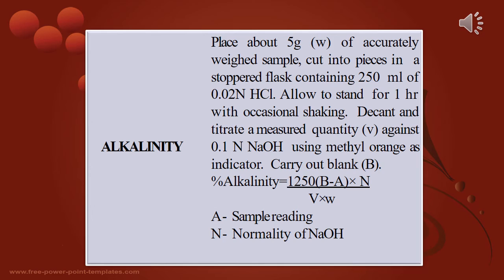For the alkalinity test, place about 5 grams of accurately weighed sample, cut into pieces, in a stoppered flask containing 250 ml of 0.02 normal hydrochloric acid. Allow to stand for 1 hour with occasional shaking. Decant and titrate a measured quantity V against 0.01 normal sodium hydroxide using methyl orange as indicator. Percentage alkalinity is calculated using the formula: (1000 × 50 × B − E × N) / (V × W), where N is the normality of sodium hydroxide.